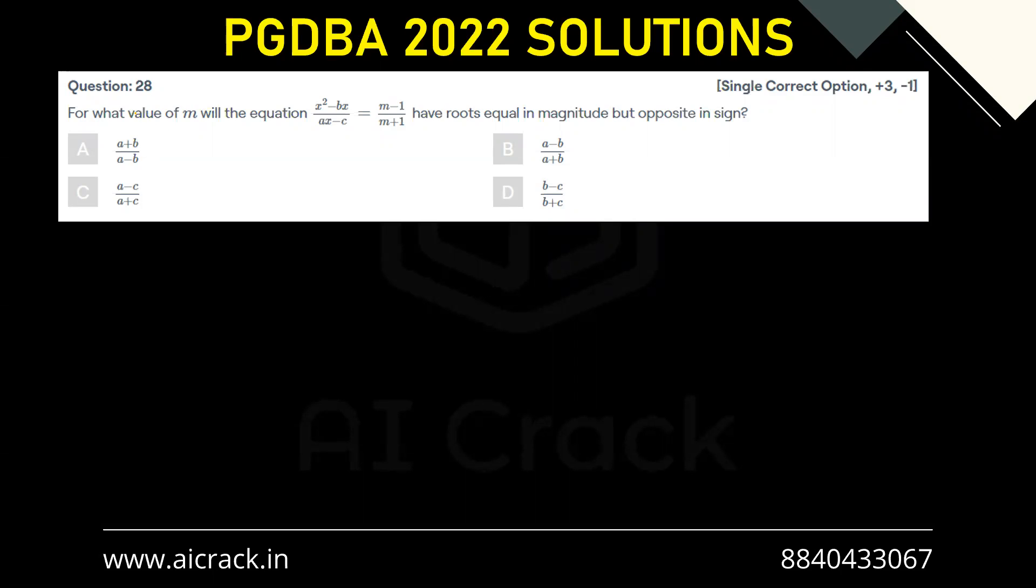Hi everyone, let's discuss question number 28. For what value of m will the equation x² - bx divided by ax - a equals to (m-1)/(m+1) have roots equal in magnitude but opposite in sign?